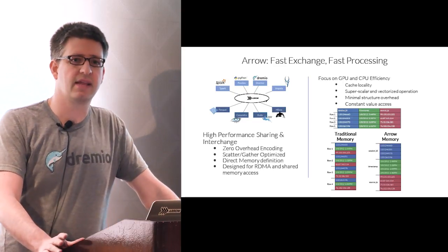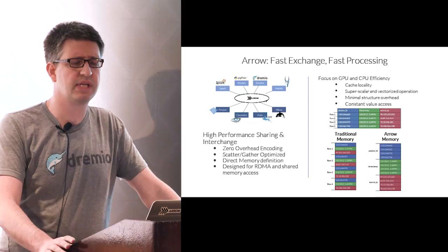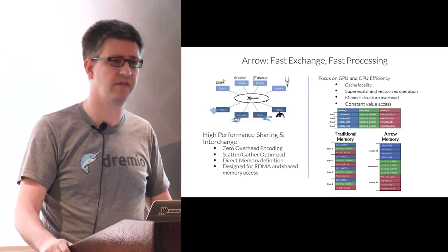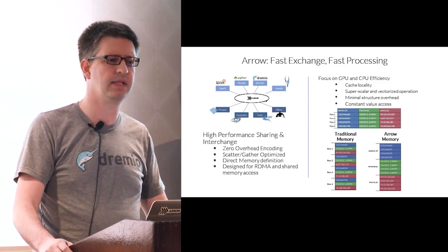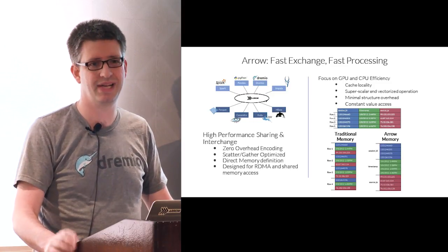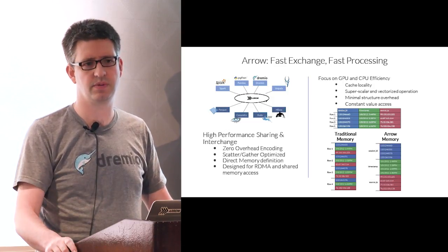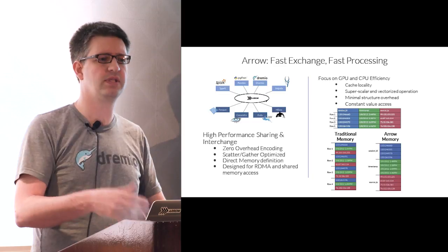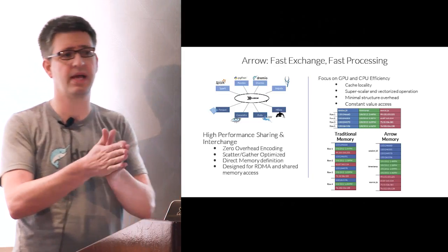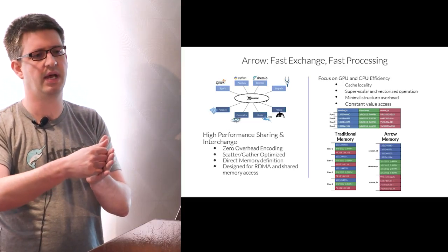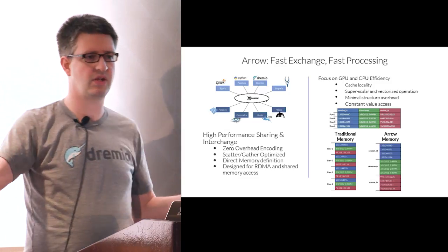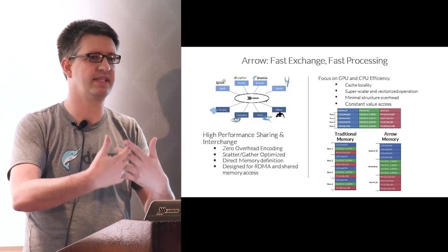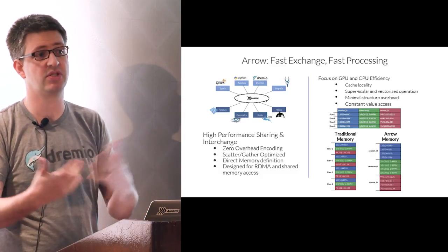There's a chicken-and-egg thing going on with Arrow. We looked at the world and said: how do we make a loosely coupled ecosystem work without spending all our time on deserialization? Analysis shows you might spend 80 to 90 percent of resources on serialization and deserialization when moving between systems. Each system has its own internal representation, so you take the internal representation, expose it as an API, and the other system converts it — causing conversion overhead plus cell-by-cell data access.